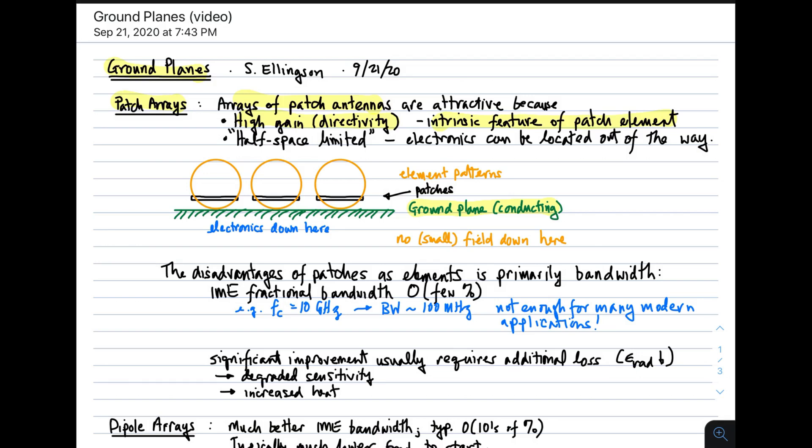The other attractive feature of a patch antenna is that it's half space limited, and by that I mean the electronics can easily be located out of the way, in particular below the ground plane. And the reason that works is because the electric field is small, in fact zero for an infinite ground plane, beneath the ground plane.